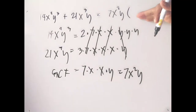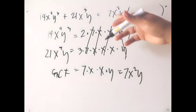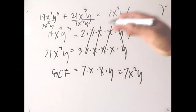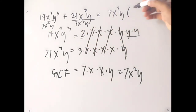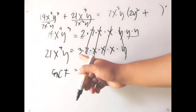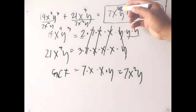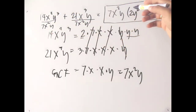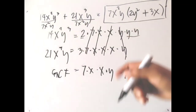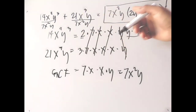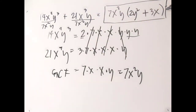Now that we have GCF = 7x²y, find what remains inside the parentheses. From 14x²y³: after taking out 7x²y, what's left is 2 times y² — so 2y². From 21x³y: after taking out 7x²y, what's left is 3x. So the factored form is 7x²y(2y² + 3x). We can verify: 7x²y × 2y² = 14x²y³, and 7x²y × 3x = 21x³y. Correct!